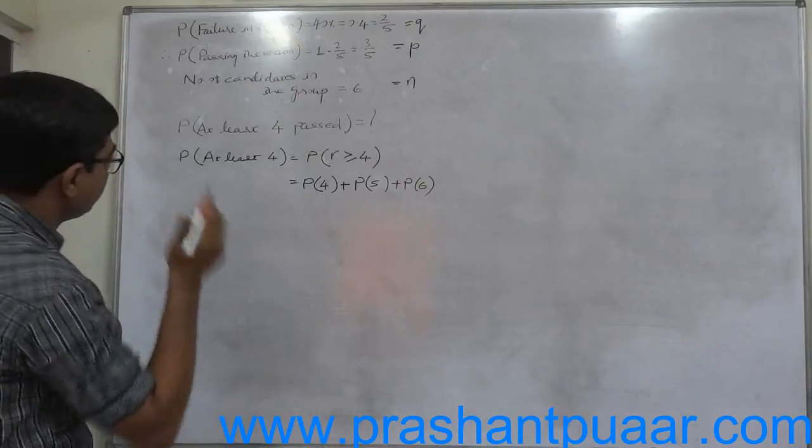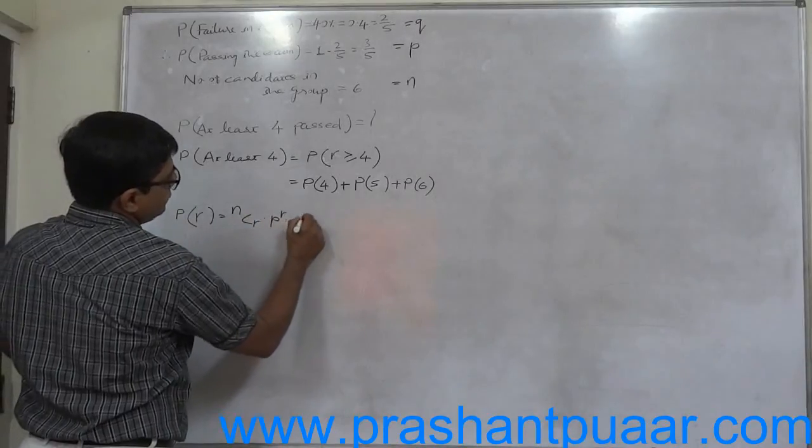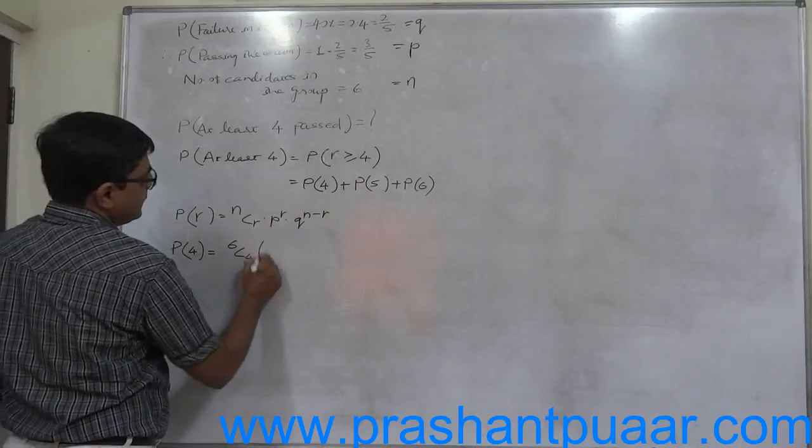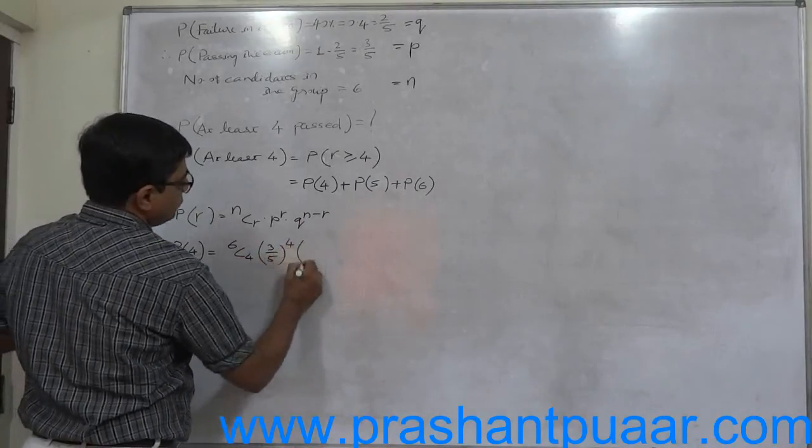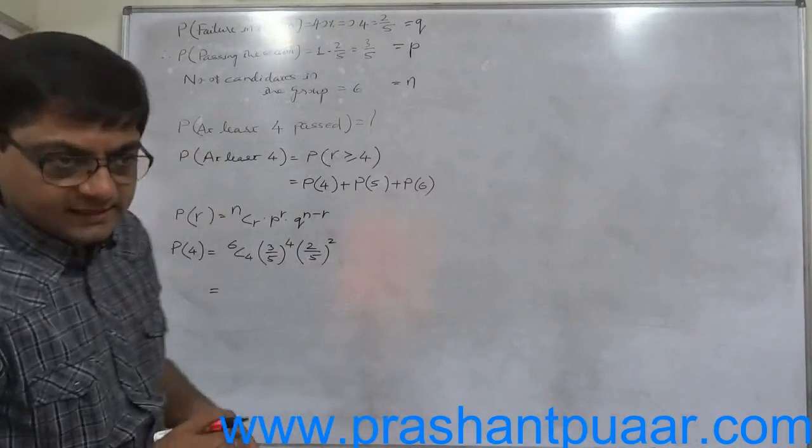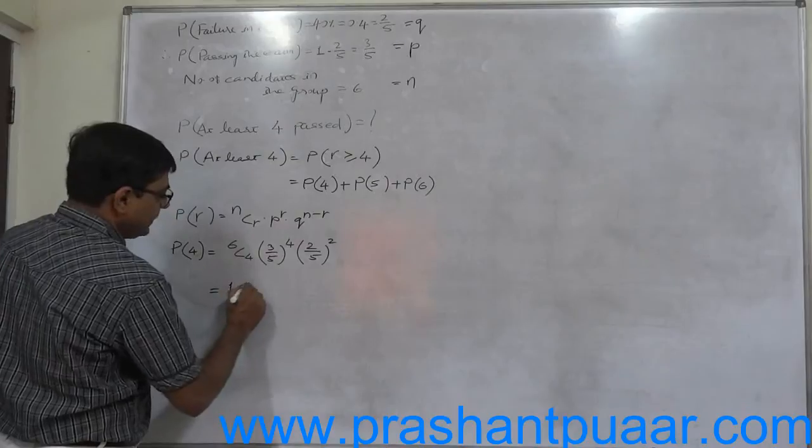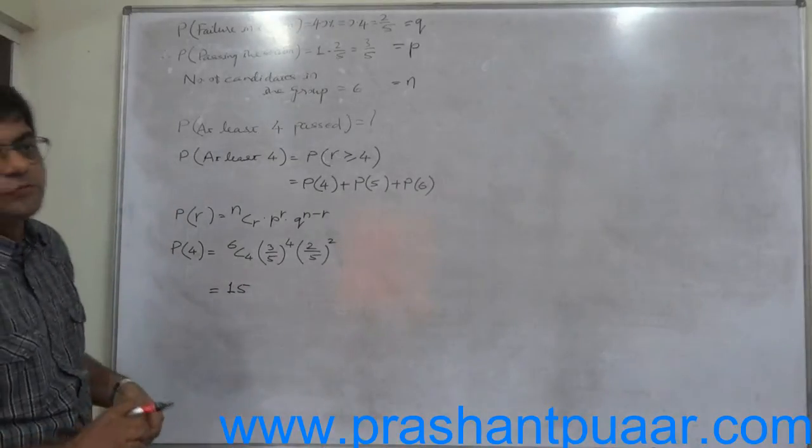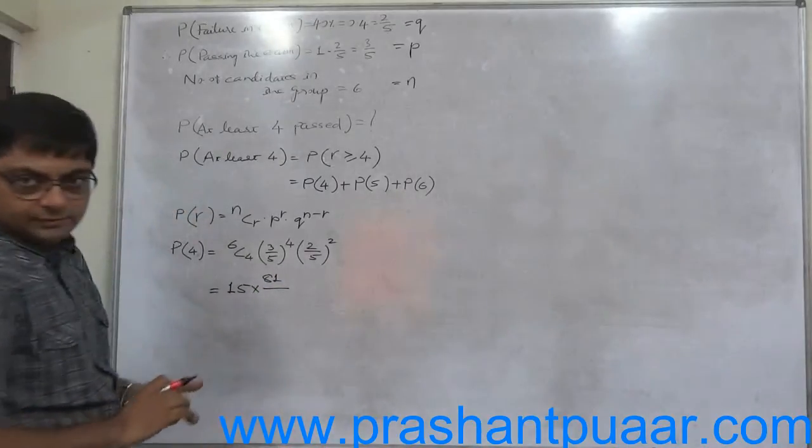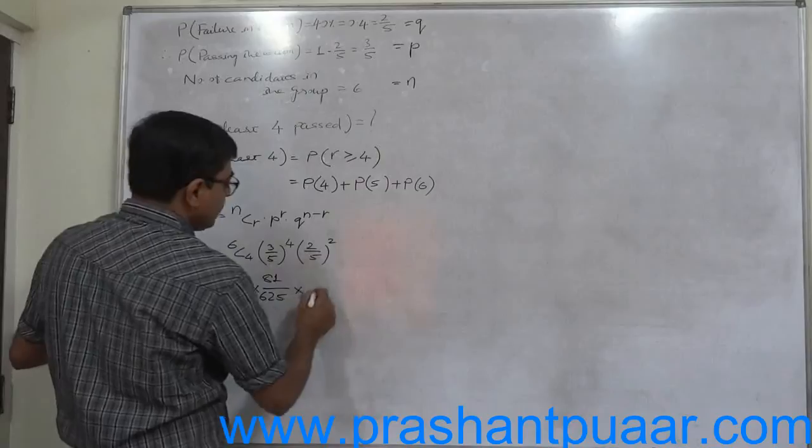Probability of R successes is nCR into P raise to R into Q raise to n minus R. First of all, probability of 4 is 6C4 into 3 by 5 raise to 4 into 2 by 5 raise to 6 minus 4, that is 2. Now 6C4 is equal to 6C2, and 6C2 means 6 into 5 divided by 2, so it is 15. 3 raise to 4: 3, 9, 27, 81. 5 raise to 4: 5, 25, 125, 625. Into 2 raise to 2, 4, 5 raise to 2, 25.